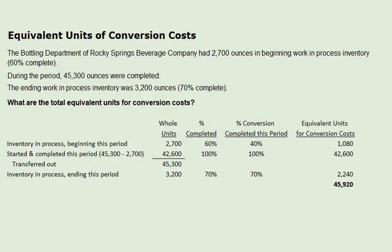The Baudelain Department of Rocky Springs Bavage Company had 2,700 ounces in beginning work-in-process inventory, 60% complete. During the period, 45,300 ounces were completed. The ending work-in-process inventory was 3,200 ounces, 70% complete. What are the total equivalent units for conversion costs?